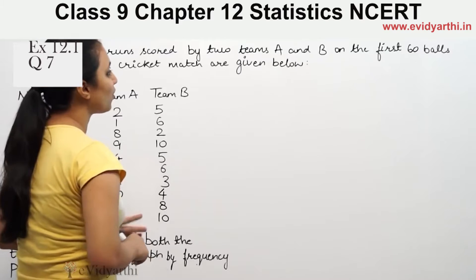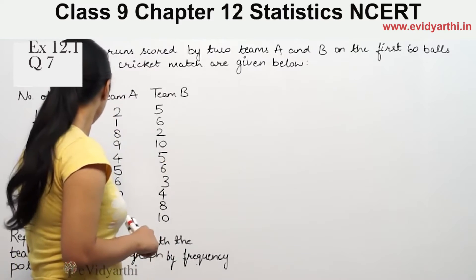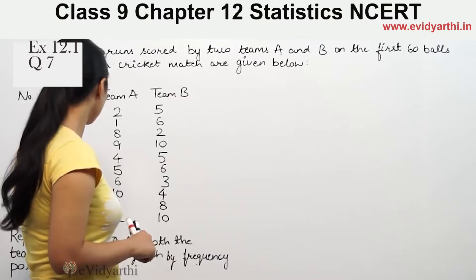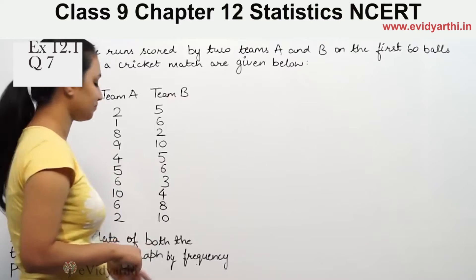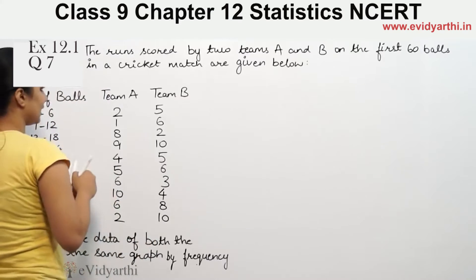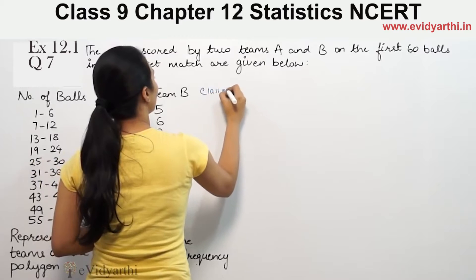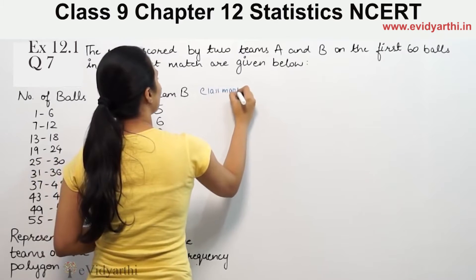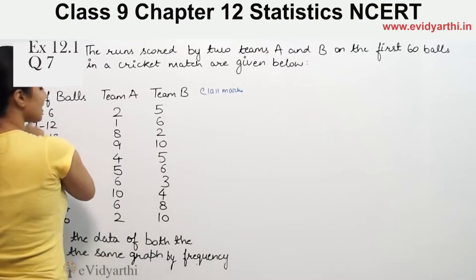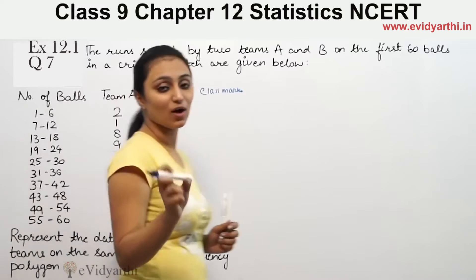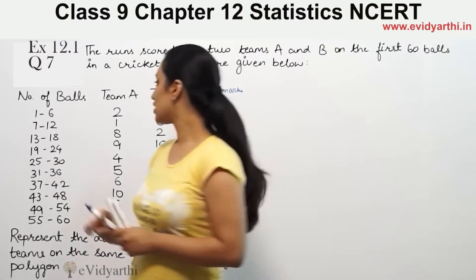We need to represent the data of both teams on the same graph by a frequency polygon. To draw a frequency polygon, we need to find the class marks, which is upper limit plus lower limit divided by 2.